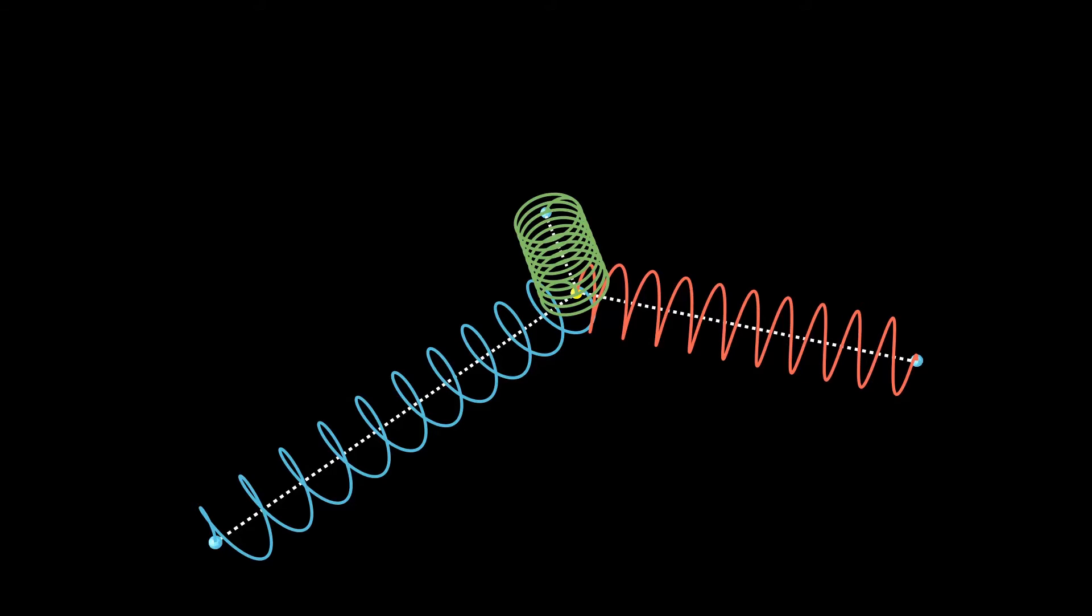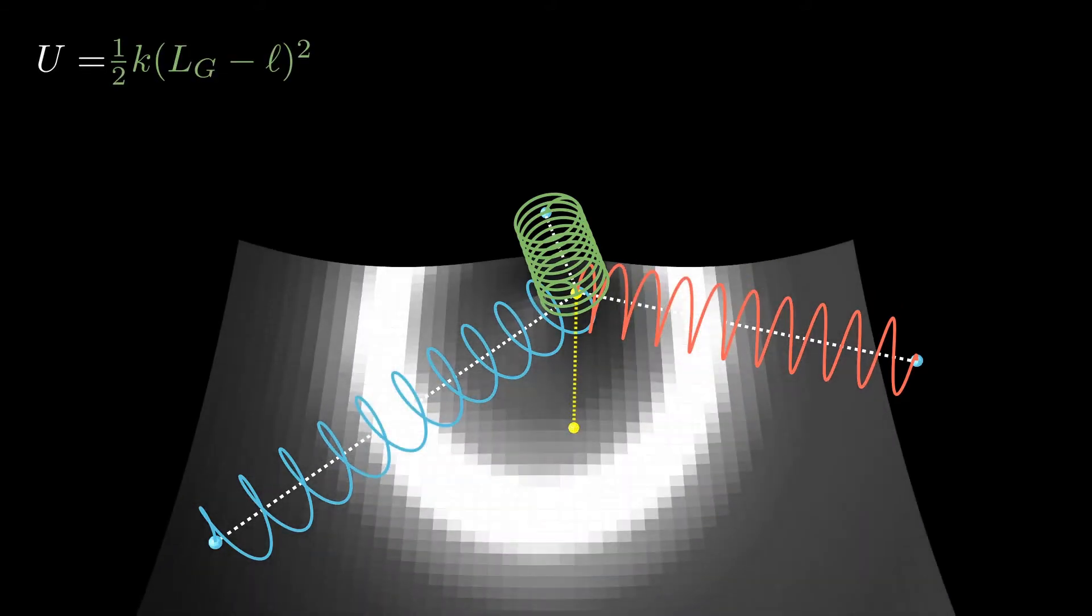For example, here we would see the potential energy that this green spring would have. The spring always tries to push the point so that the energy is minimized.